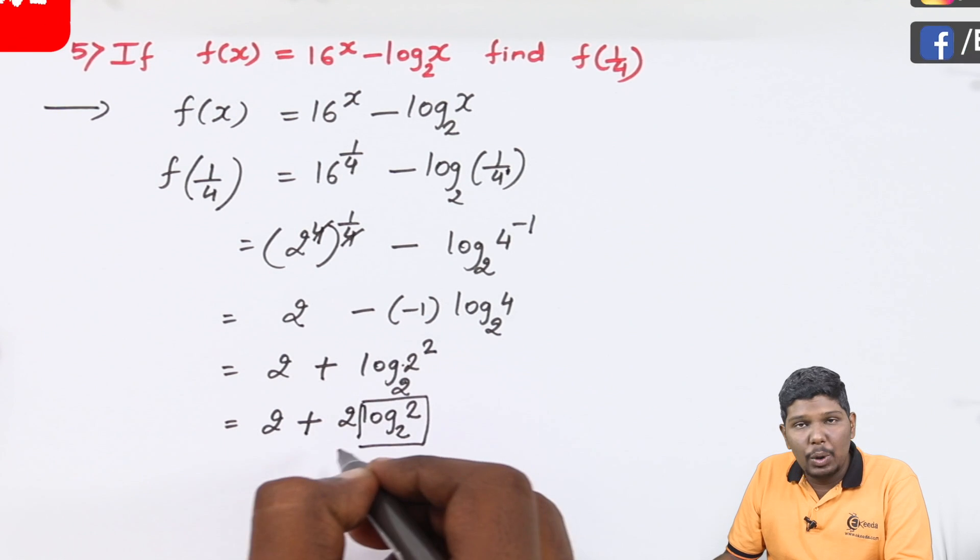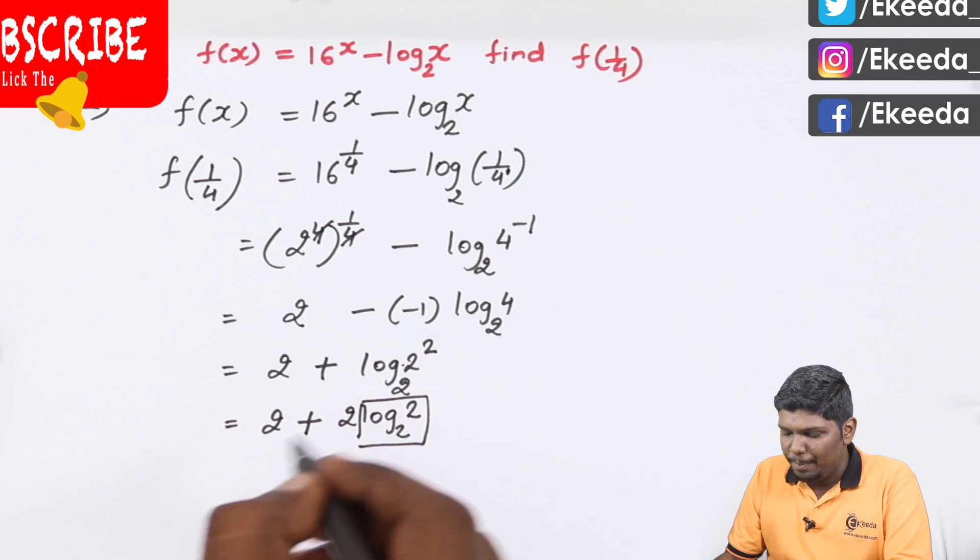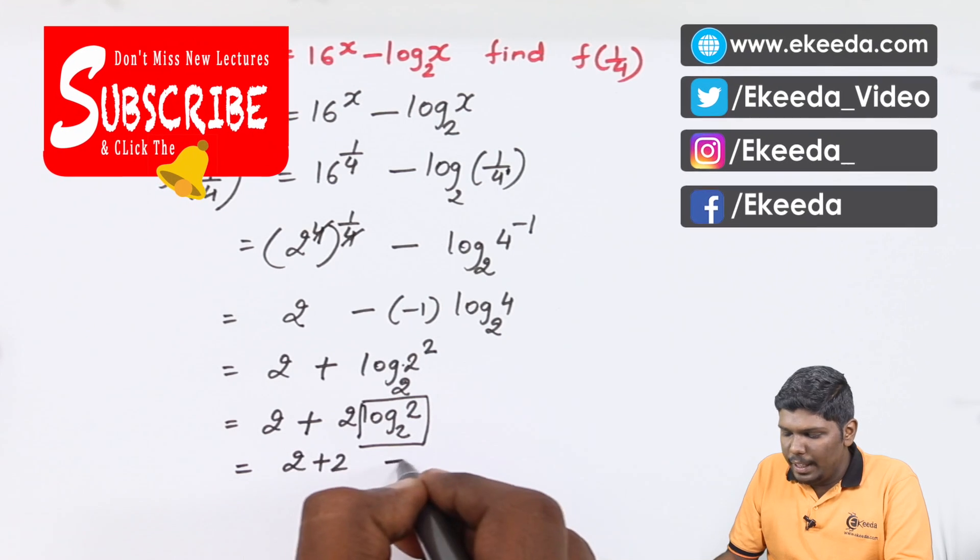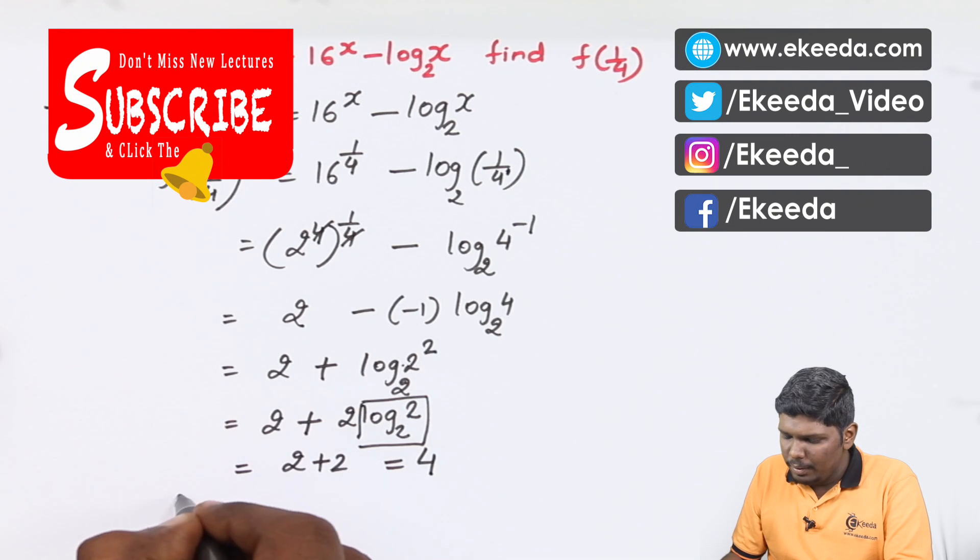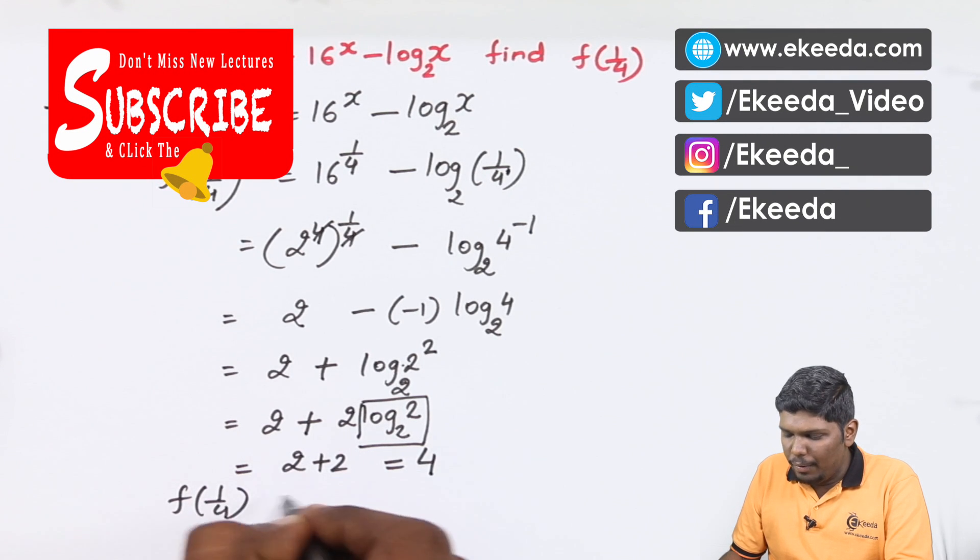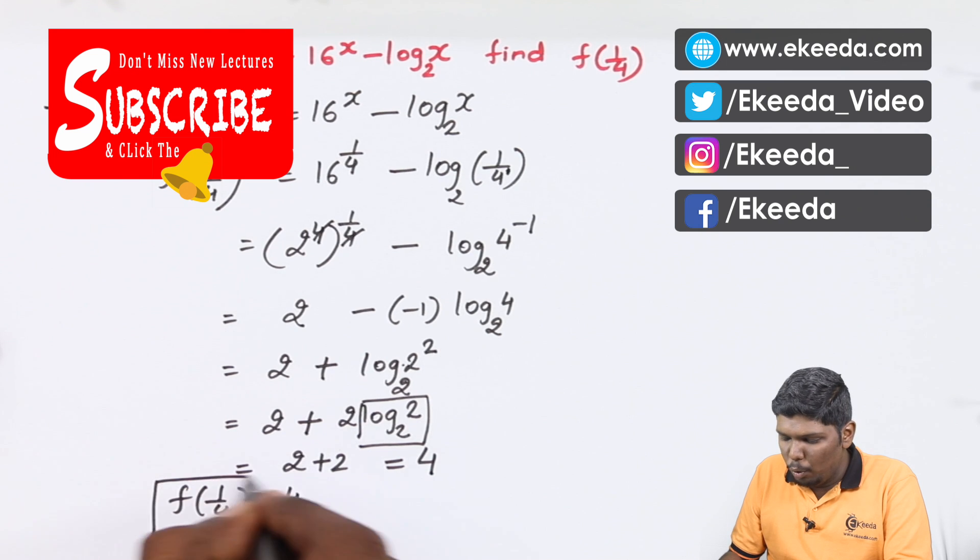Log 2 to the base 2 will have value 1. So this becomes 2 plus 2 that is equal to 4. f of 1 by 4, the final answer will be equal to 4.